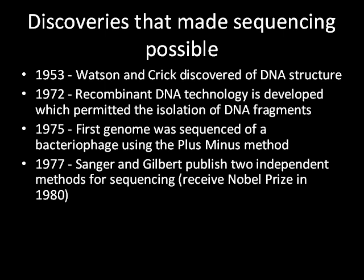Several discoveries made DNA sequencing possible. The first was in 1953 by Watson and Crick when they discovered the structure of DNA, which will be discussed in another topic in this series. In 1972, recombinant DNA technology was developed, permitting the isolation of DNA fragments. In 1975, the first genome was sequenced from a bacteriophage using the plus-minus method. In 1977, Sanger and Gilbert published two independent methods for sequencing, and both received the Nobel Prize for this work in 1980.